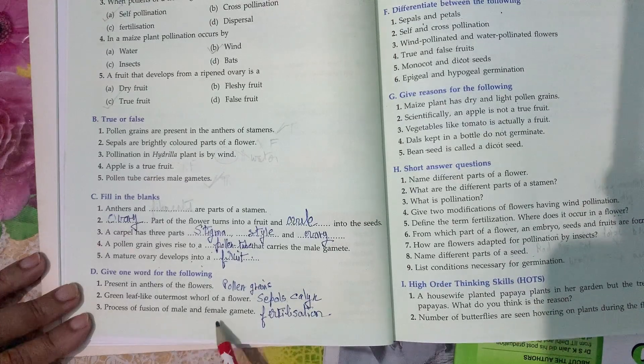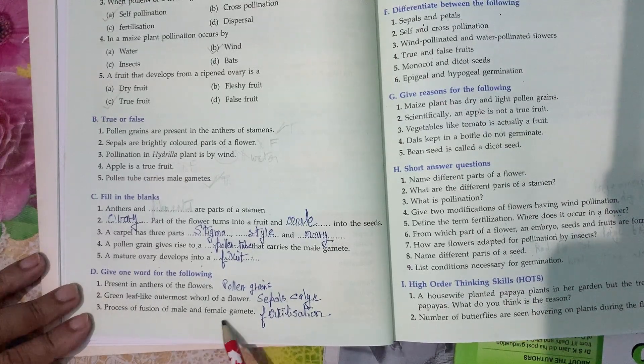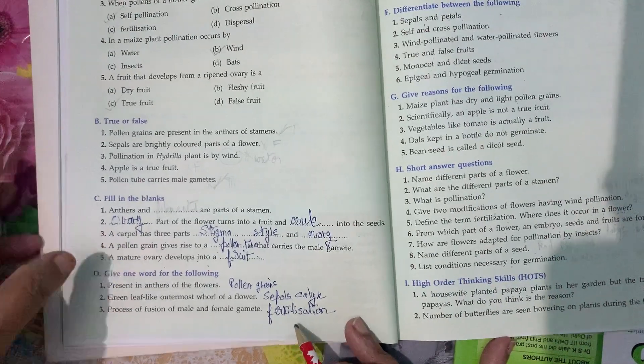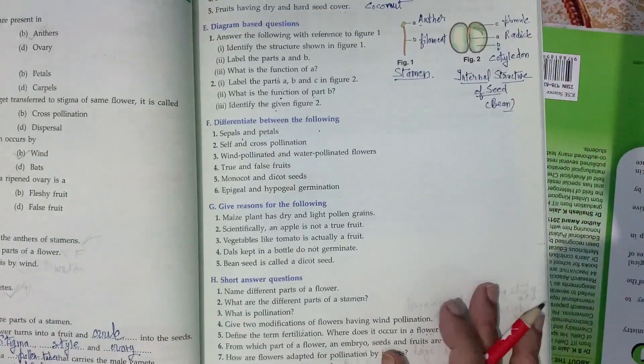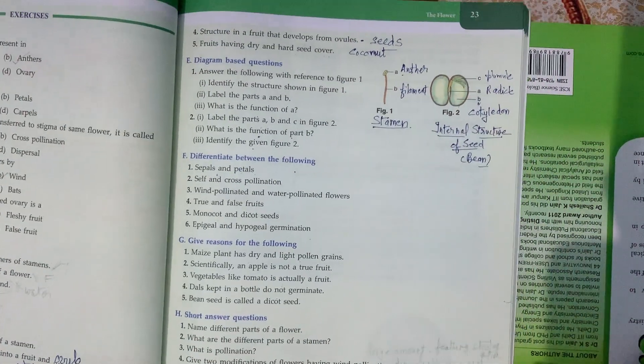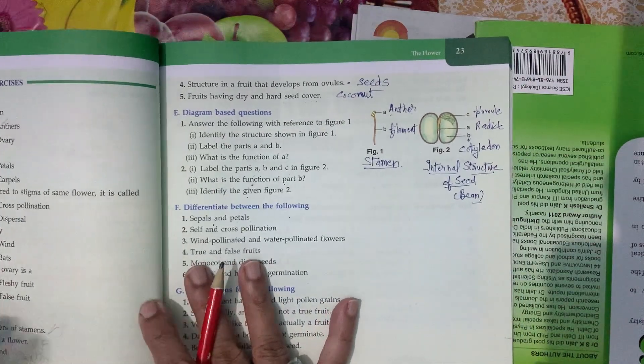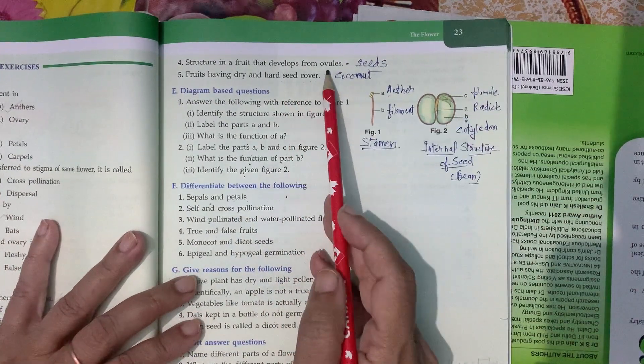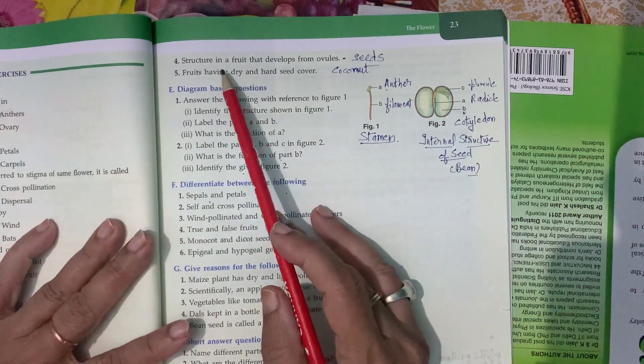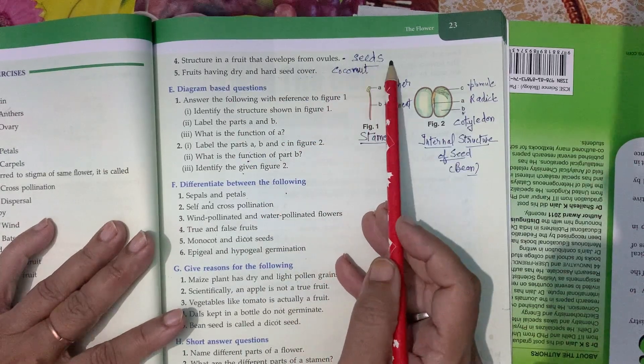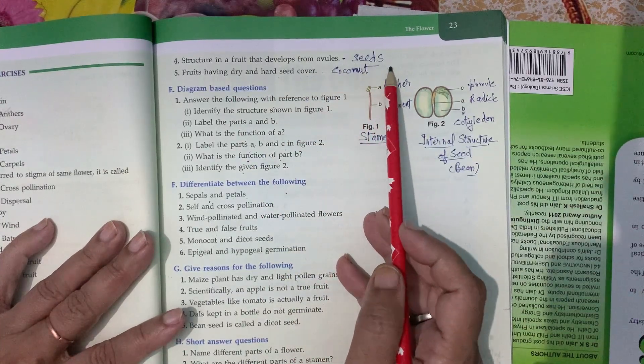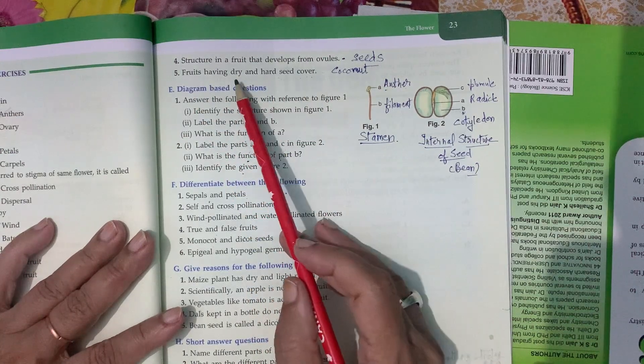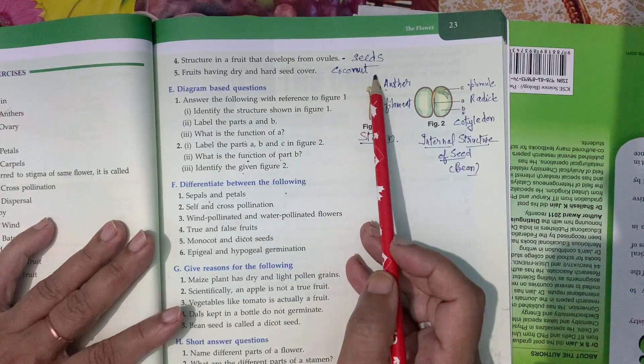Process of fusion of male and female gamete is called fertilization. Structure in a fruit that develops from ovule - it is seed. Next, fruits having dry and hard seed cover. It is caryopsis.